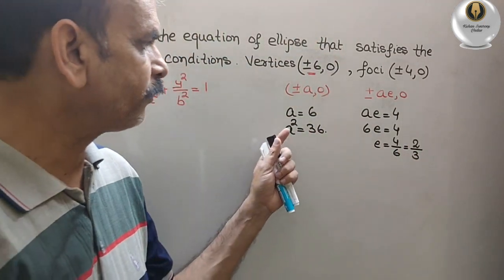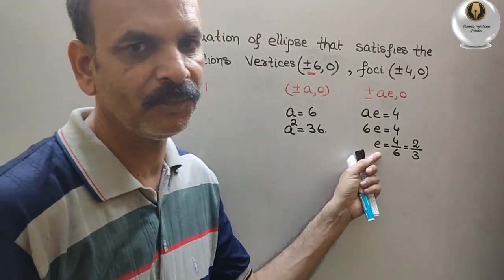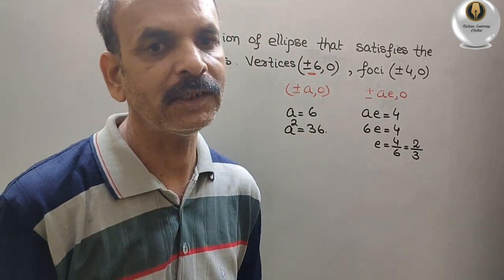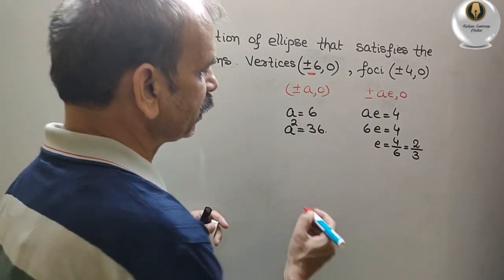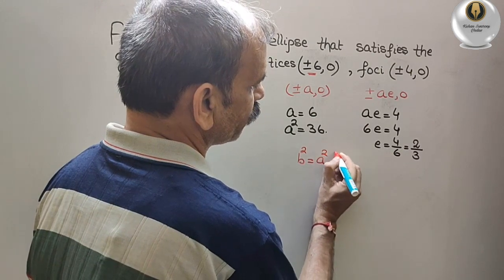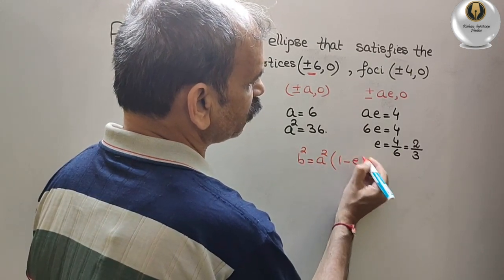With the help of a and e, we can find out b square. Yes, we can find out. What is the formula for that? b square is equal to a square 1 minus e square.